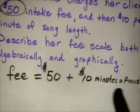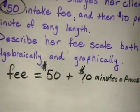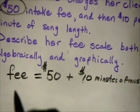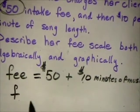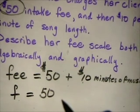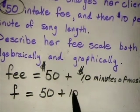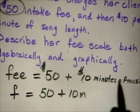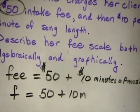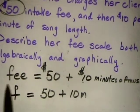No algebraist is going to say this long verbal form is appropriate — it's too long. We want to code it up symbolically. We let F stand for the fee, write 50 (we lose the dollar sign because it's understood), plus 10 times M, where M stands for minutes of music.